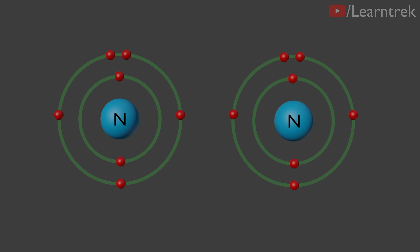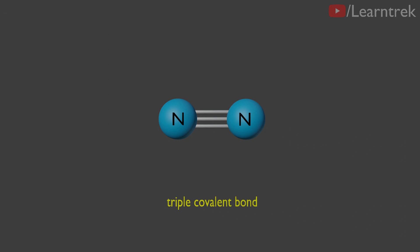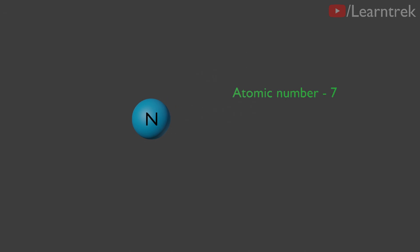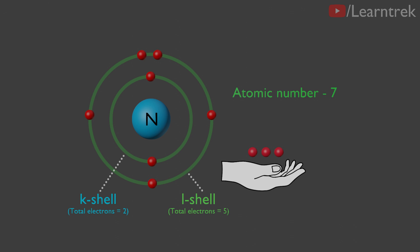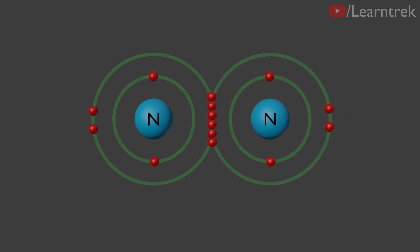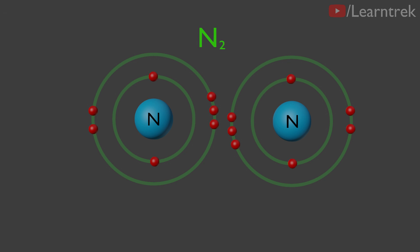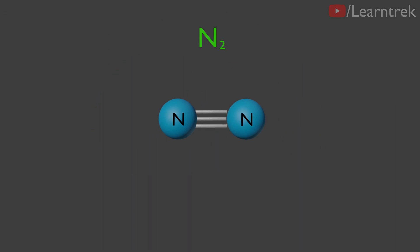If three pairs of electrons, or six electrons, are shared between two atoms, then it is called a triple covalent bond, represented by three lines between two atoms. For example, the nitrogen molecule N2 has a triple covalent bond between its two nitrogen atoms. The atomic number of nitrogen is seven; it has two electrons in its K shell and five electrons in its L shell, and it requires three more electrons to fill its L shell. Each atom of nitrogen shares three electrons with another atom of nitrogen to form N2, giving rise to three shared pairs of electrons forming a triple covalent bond.